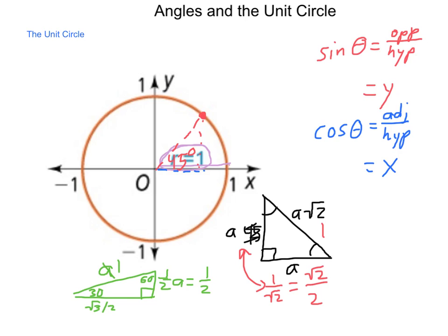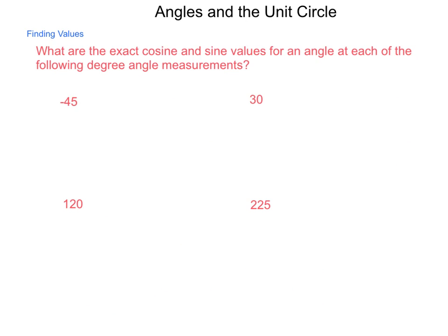So, let's take a look at finding some exact values of angles in standard form. What would be the exact cosine and sine values for angles at each of the following measurements? We're going to start these out with a quick sketch. So, if we have our basic angle and we go a negative 45 degrees, we reference back to our 45, 45, 90 triangle.